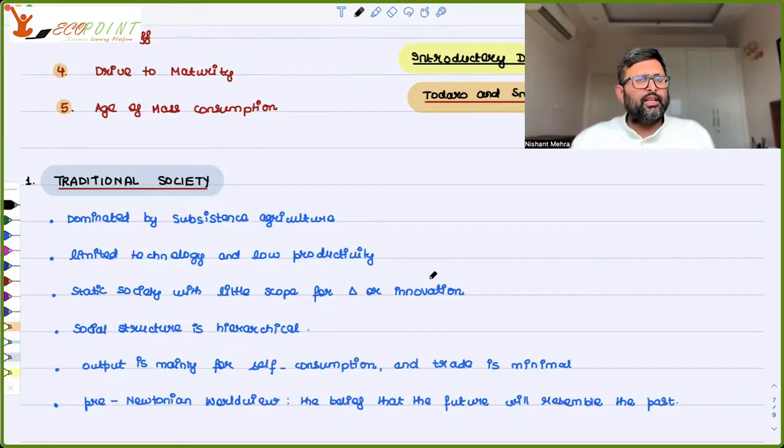Whatever occupation I am in, my children will also be in the same occupation. Their children will also be more or less in the same occupation. Output is mainly for self-consumption. There is hardly any trade happening. People are not producing for the market, they're producing for their own consumption. How much can you produce on your own? That is not possible. So there is hardly any trade, forget about any import export. This is a pre-Newtonian view, that the future will be almost the same as the past. As we are looking at so many changes at once, it is not the case in traditional society. Whatever happened in the past will happen in the future also.